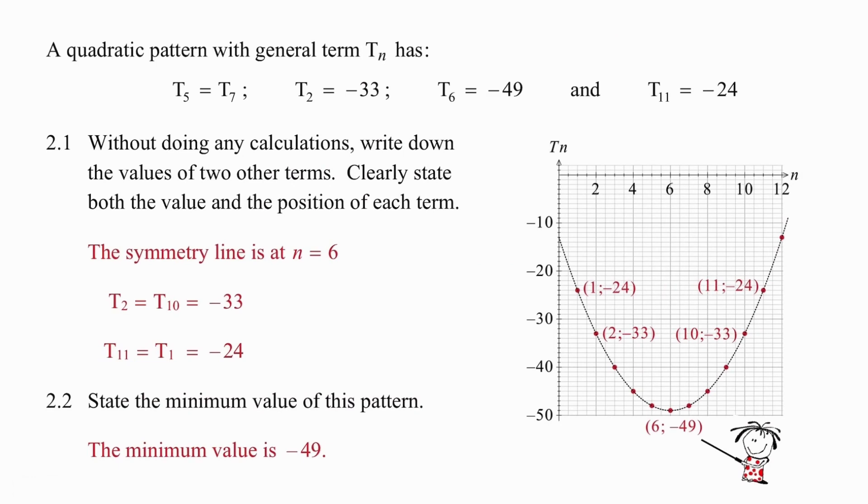In the first question we are given only a few facts. We know that t5 equals t7. That is particularly important. We also know that the second term is minus 33, the sixth term is minus 49, and the eleventh term is minus 24. The fact that we have t5 equal to t7 means that we have a symmetry line running through this pattern at n equals 6. I know that because those values cannot be equal unless they're on opposite sides of our symmetry line.